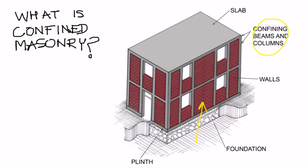Some of which are vertical and they are called tie columns, enclosing those masonry walls and horizontal elements which are at the floor level and the roof level and they are called tie beams.